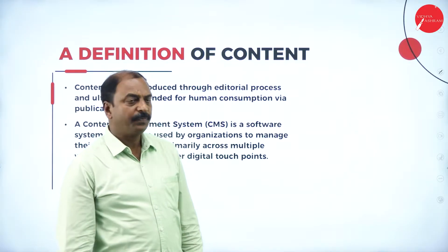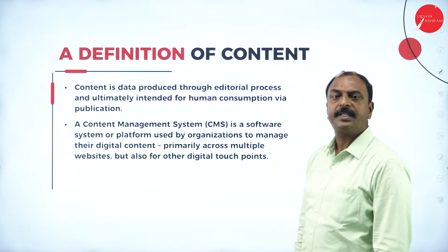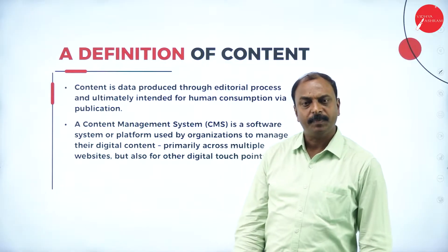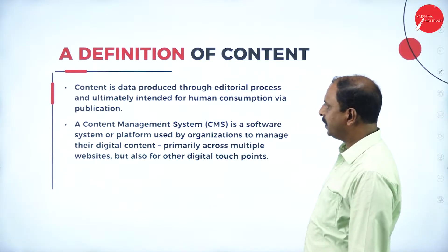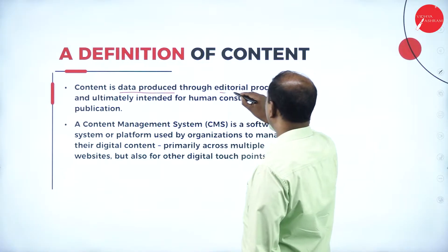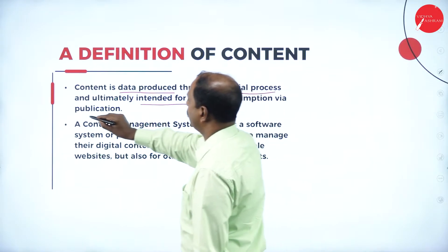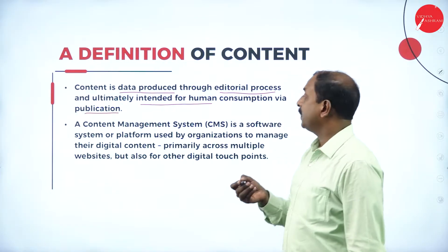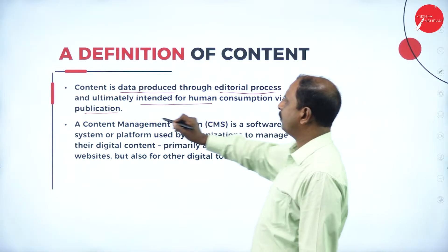Students, let us start with the definition of content. So what is a content? A content is, in general, it is an information. We can have different forms of information — information may be in the form of text, images, audio, or videos. A content is data and it is produced through an editorial process and ultimately intended for human consumption via publication. So it is nothing but information intended for human consumption via publication.